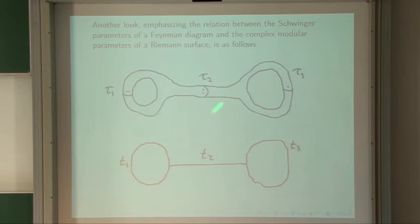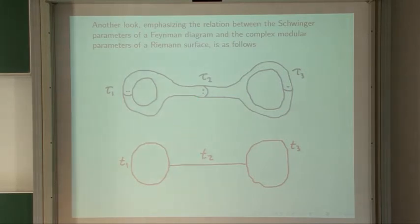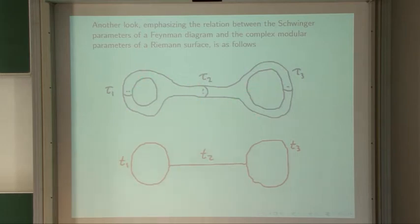Here I've drawn the corresponding string theory picture, where we thicken all the lines into tubes. The t's are complexified and become complex moduli, and our graph became a genus 2 Riemann surface. It has the property that as long as we're only doing oriented closed strings, its topology is completely determined by the number of loops, which becomes the genus.